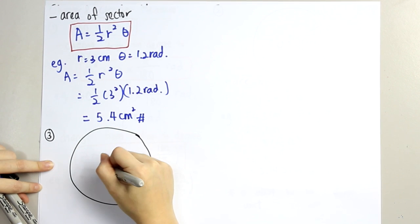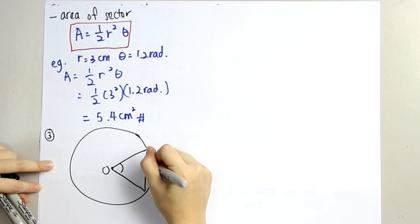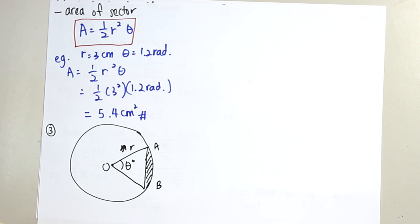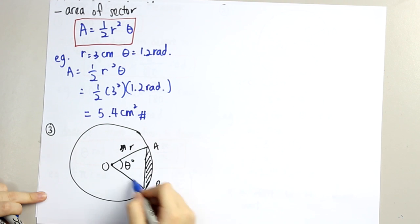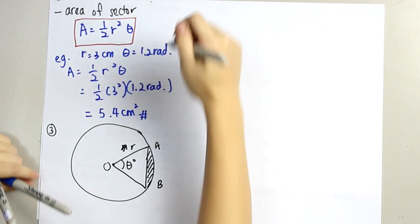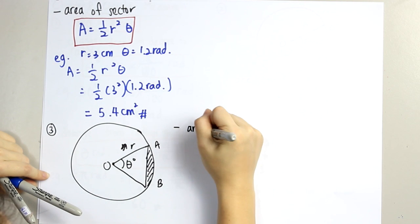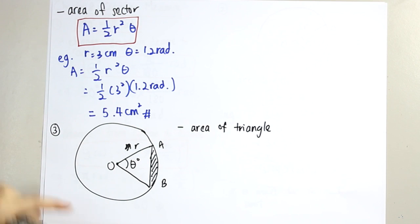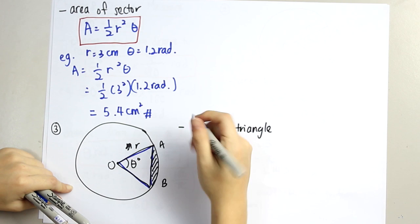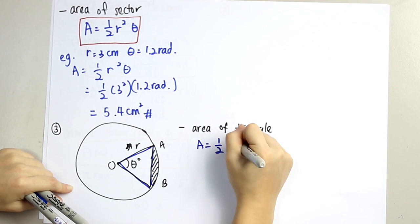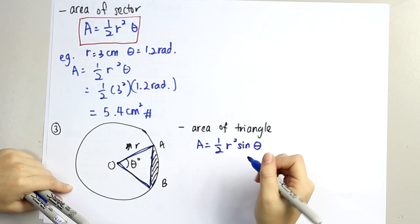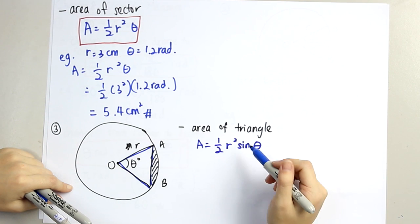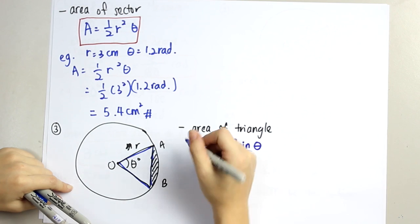We'll have a circle. To find the area of the triangle, we also have a formula. The formula to find the area of triangle is A equals 1 over 2 r squared sin theta. This is quite similar to the area of sector, only that we use sin theta instead of theta. Take note that theta here is in degree unit.